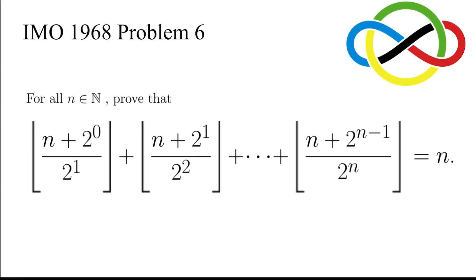In this video, we are going to solve problem 6 in IMO 1968. For all natural numbers n, prove that if we add up the floor function of (n+1)/2, (n+2)/4, all the way up to (n+2^(n-1))/2^n, the sum is equal to n.